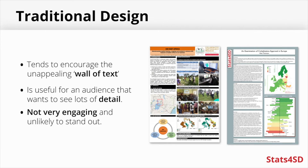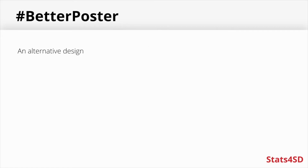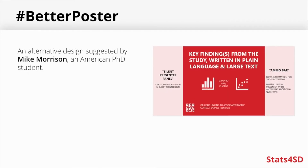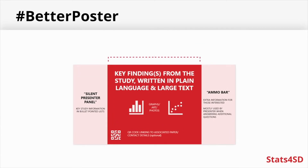In recent years, there's been increasing criticism of a lack of development and innovation when it comes to poster design. Mike Morrison, an American PhD student, has been trying to reinvigorate the world of academic posters by proposing a new, more attractive, and user-friendly alternative design. This comes from a user experience design approach. There are lots of posters in a poster session, so the idea is to maximize the number of posters the audience can see while still remembering the most important information about each one. It's about removing barriers to accessing information and making the whole experience more streamlined. The intention is to put focus on those key findings, as these are what are likely to be the most important and interesting part of the research, at least to the audience.